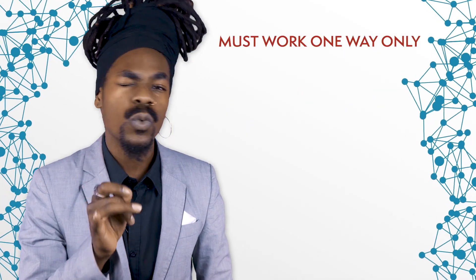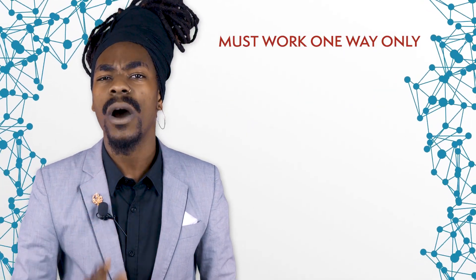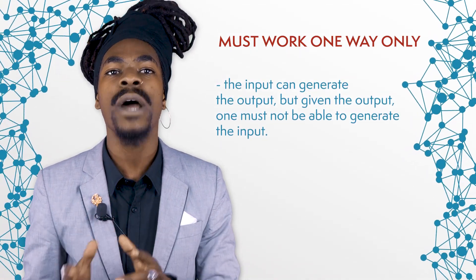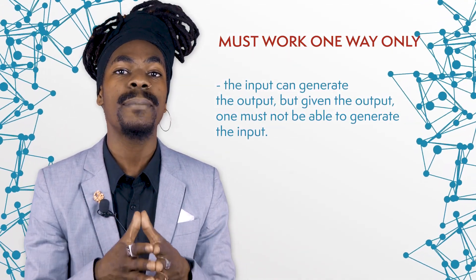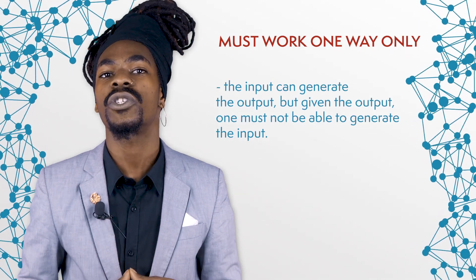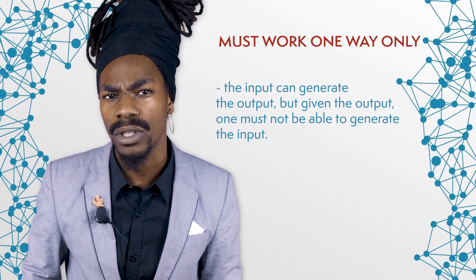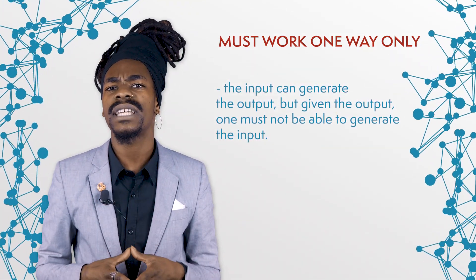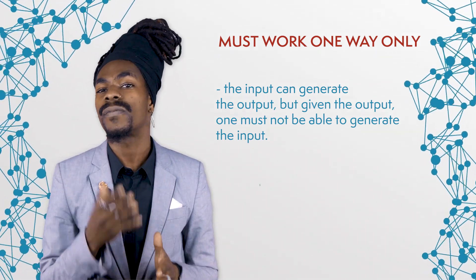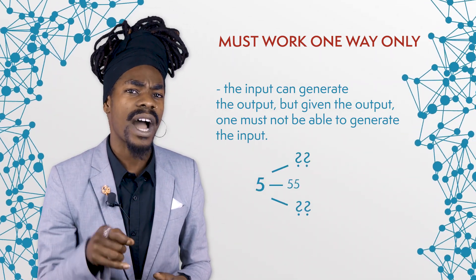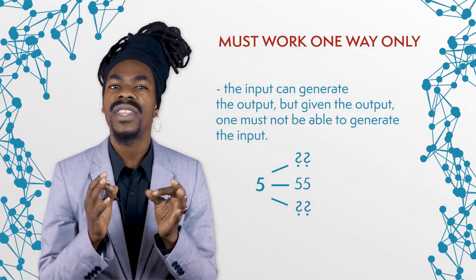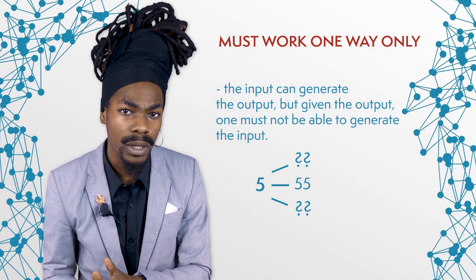Number three, it must work one way only. The input can generate the output, but given the output, one must not be able to generate the input. This is a special feature of cryptographic hash functions. Our previous example cannot fulfill this demand, because given an output of 5, I know that 55 is a possible input. In cryptography, this means that I have broken the code.